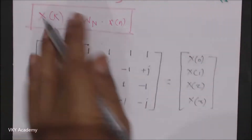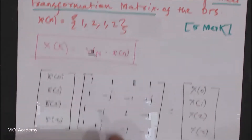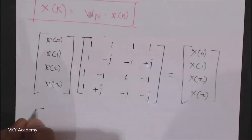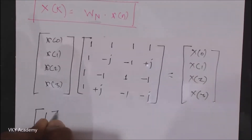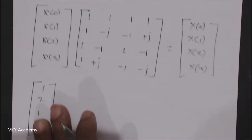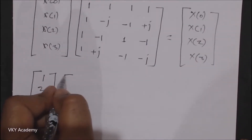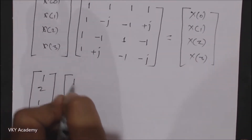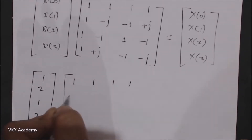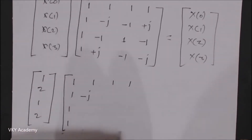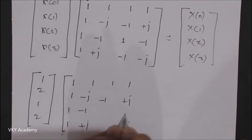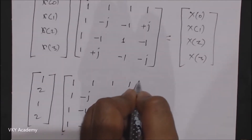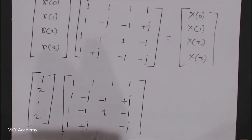So let us solve this particular question. X(n) = {1, 2, 1, 2}. The input matrix is [1, 2, 1, 2], and when this matrix is multiplied with the W matrix — 1, 1, 1, 1; 1, -j, -1, +j; 1, -1, 1, -1; 1, +j, -1, -j — this W matrix is very easy to remember.